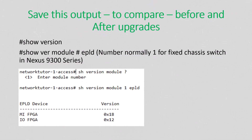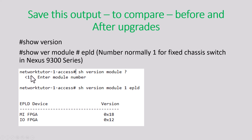First, you need to make sure to look at the version you have right now and decide what version you need to upgrade to. Also, look at the EPLD image version on it. You have to issue the command 'show version module' with the module number and EPLD. Normally it is a fixed switch, so this number is 1. You will see what features you have in this switch.